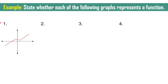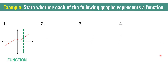Let us see these examples. In number 1, we have a graph. To identify if this graph is a function, you may draw a vertical line anywhere on the graph and see if it intersects at only one point — then this graph is a function. But if it intersects at two or more points, then that is not a function. As you can see, it only intersects at one point. Therefore, this graph is a function.